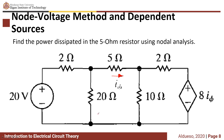First we need to assign a reference node. Our choice is this node right here, so this is our reference node. Then let's label the non-reference nodes: V1 and V2.